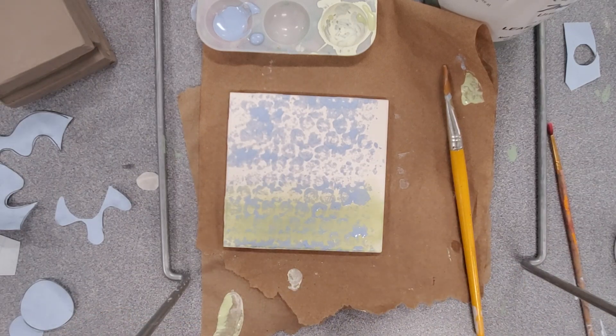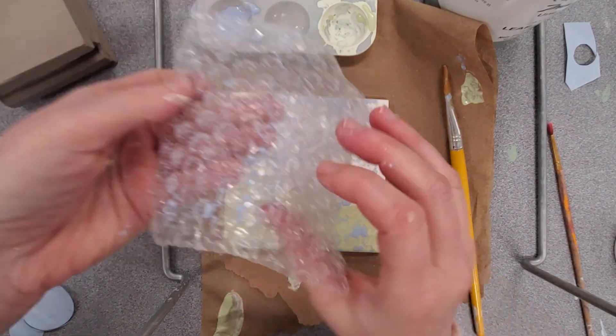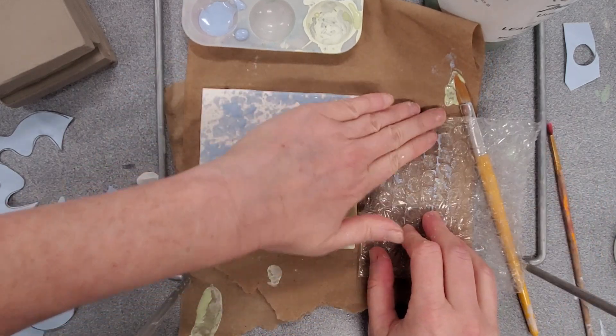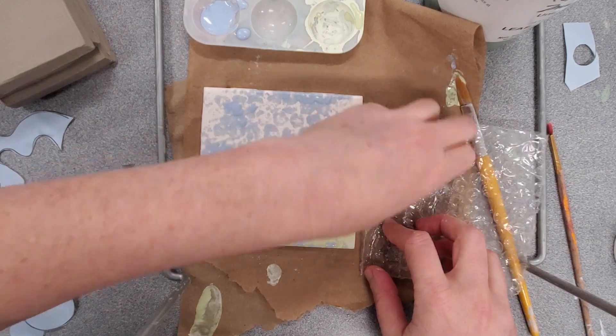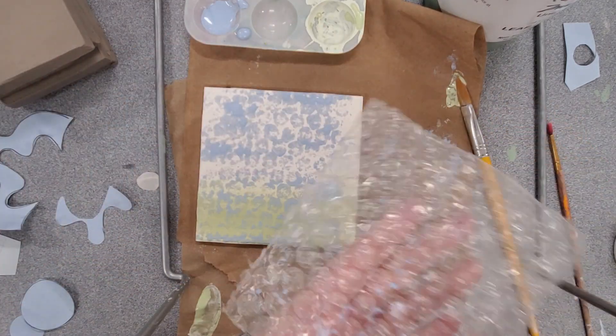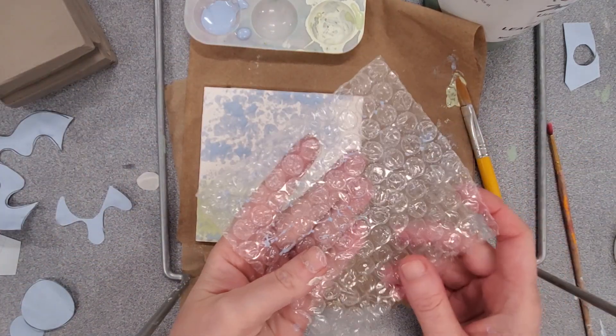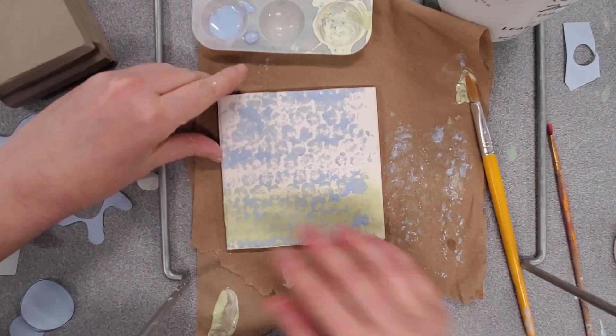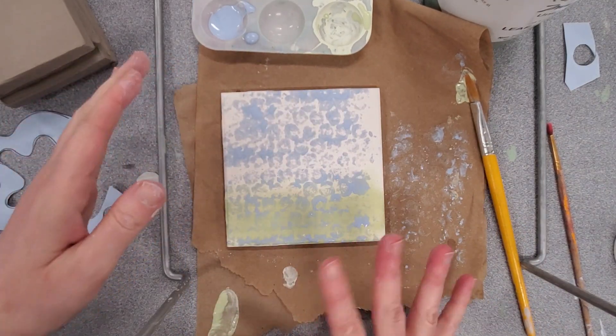This is what I have so far. This you can then dab off on a piece of paper towel. I would say eighth grade you don't need to coat this because you're just wasting the underglaze.